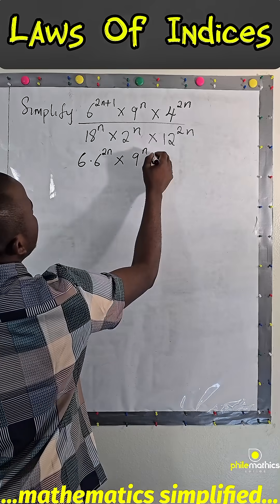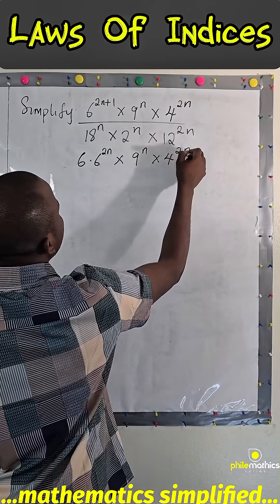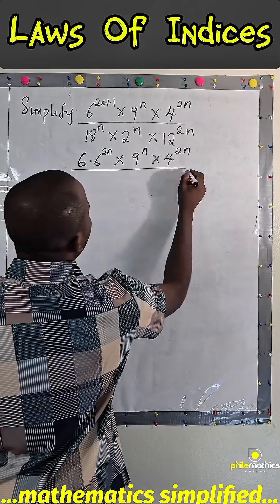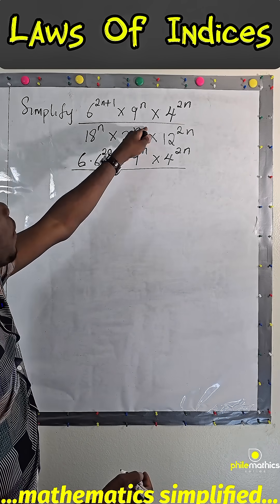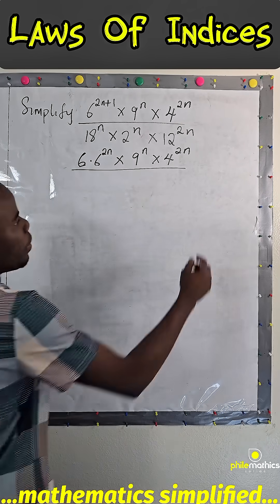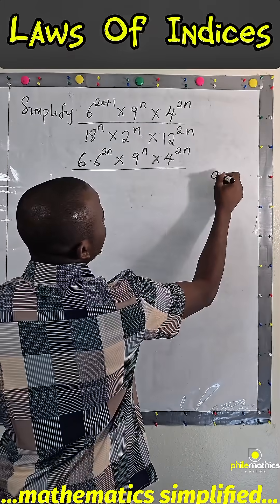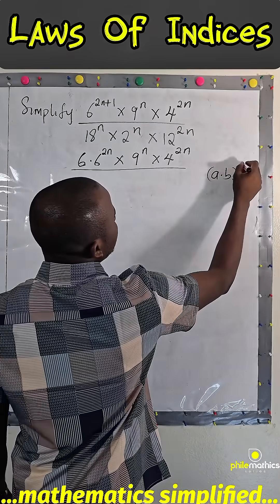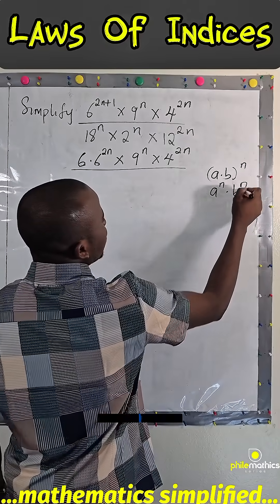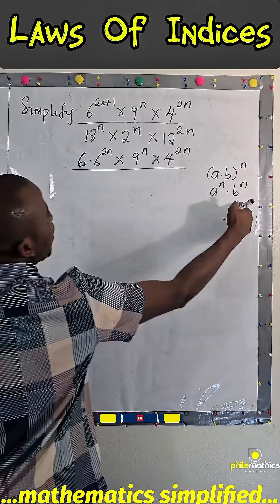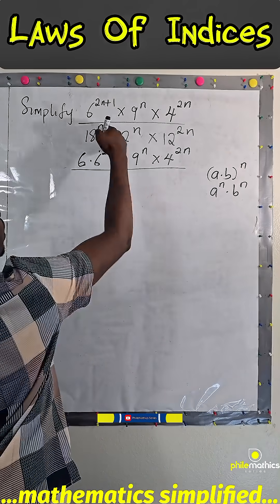9 to the power n times 4 to the power 2n. Over, since these two have the same power, we can multiply them. Remember that if we have a dot b to power n, this can be a to power n times b to power n. Likewise, I can take this back to this by multiplying them and bringing that the power. Since the power